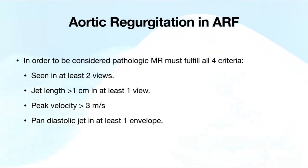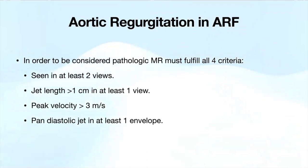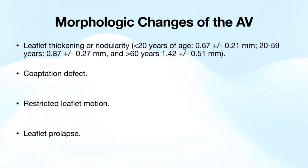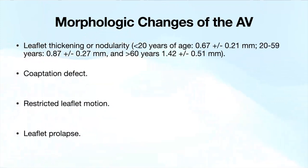For aortic regurgitation, similar to MR, you must fulfill all four criteria: seen in at least two views, jet length more than one centimeter in at least one view, peak velocity more than three meters per second, and a pan-diastolic jet on CW in at least one envelope. Morphologic changes in the aortic valve include leaflet thickening with age-specific cutoffs: under 20 it's 0.67 mm (±0.21), ages 20 to 60 it's 0.87 mm (±0.27), and above 60 it's about 1.4 mm (±0.5). Other changes include coaptation defect, restricted leaflet motion, and leaflet prolapse.